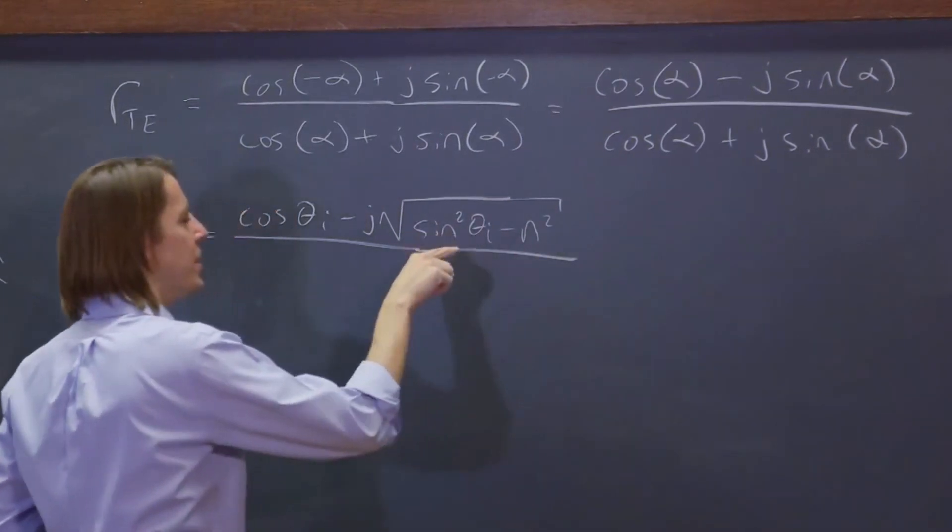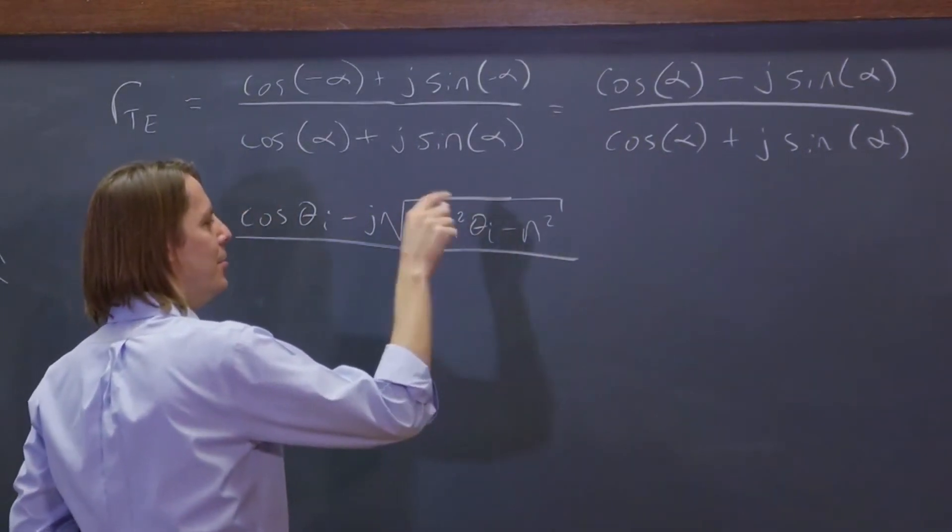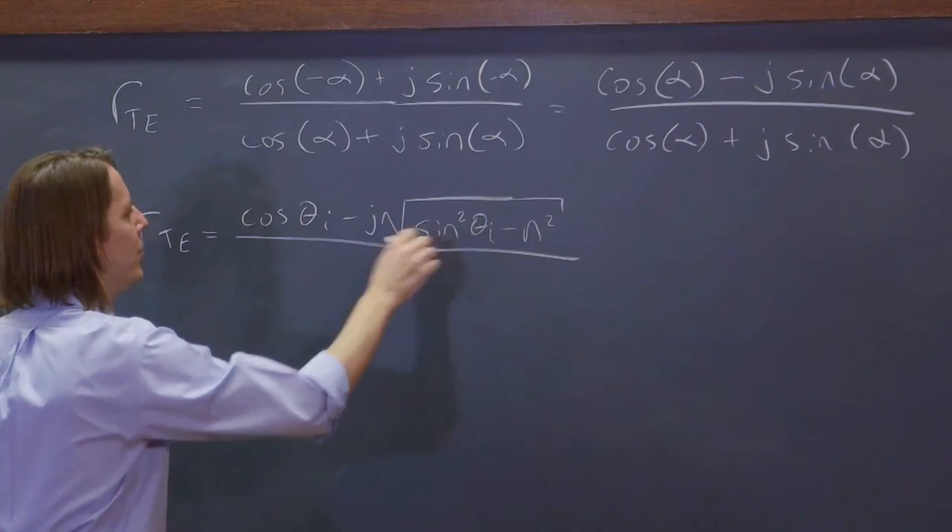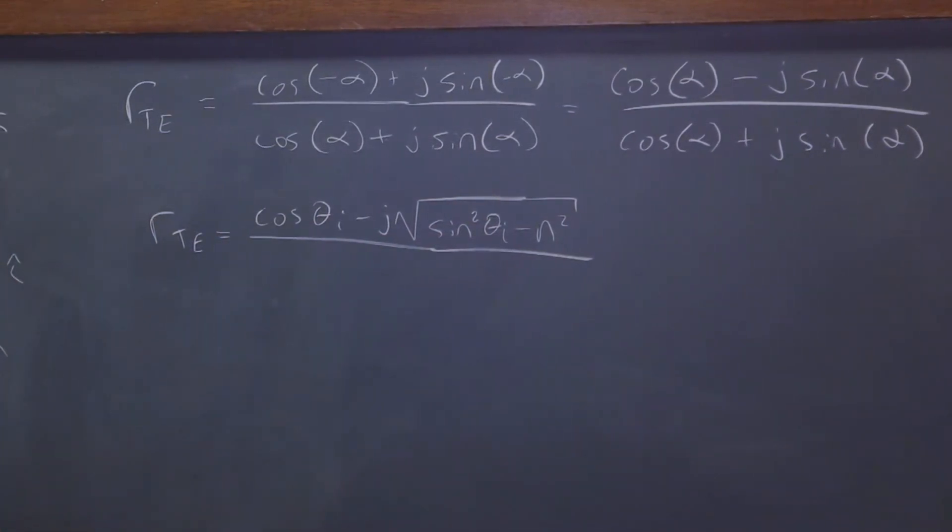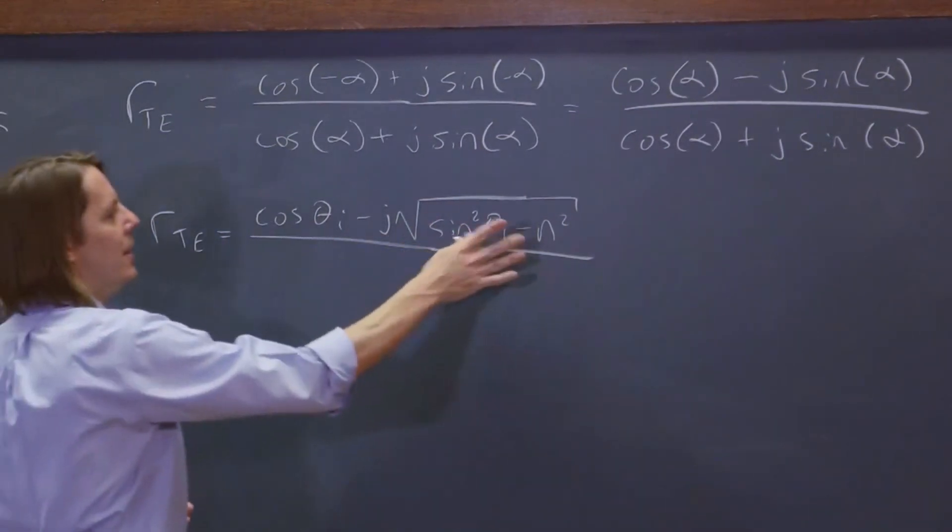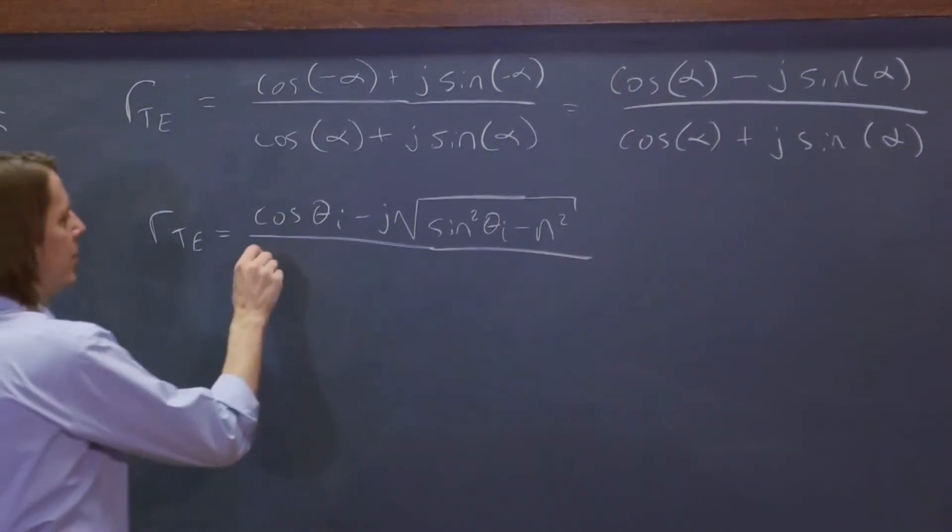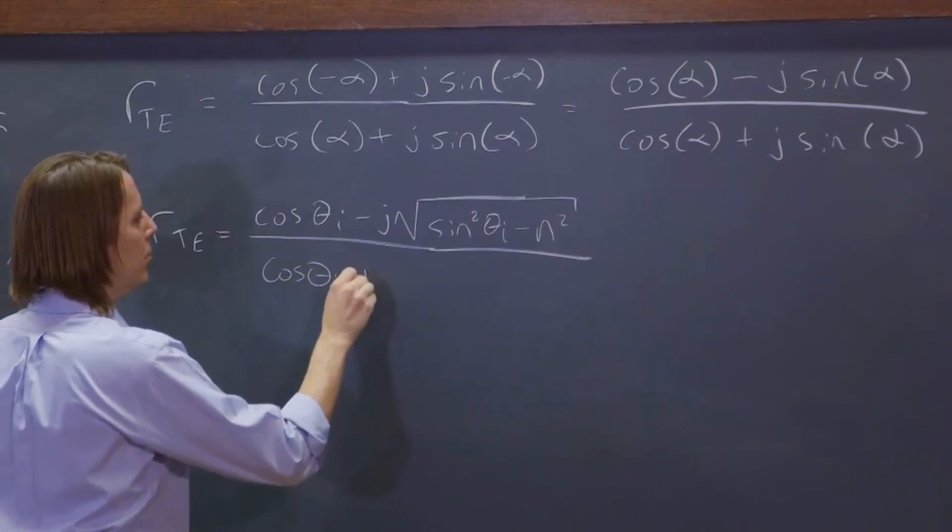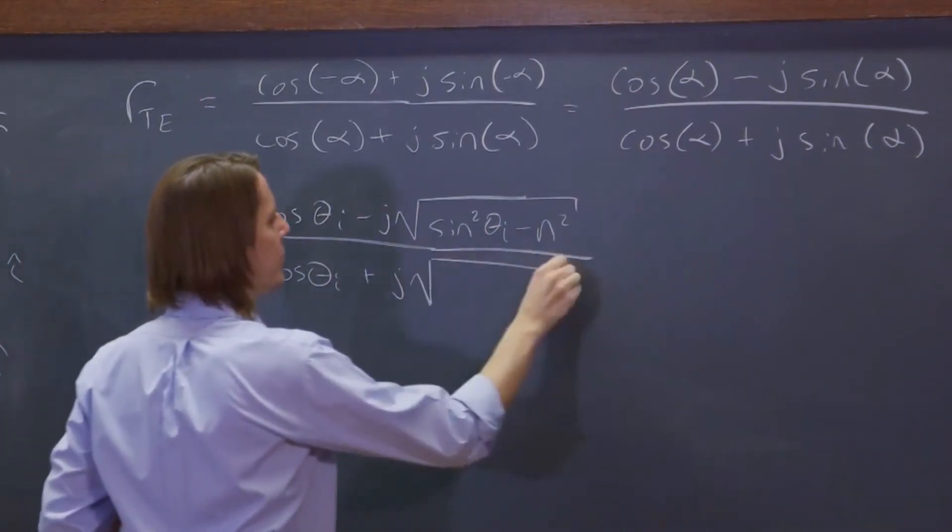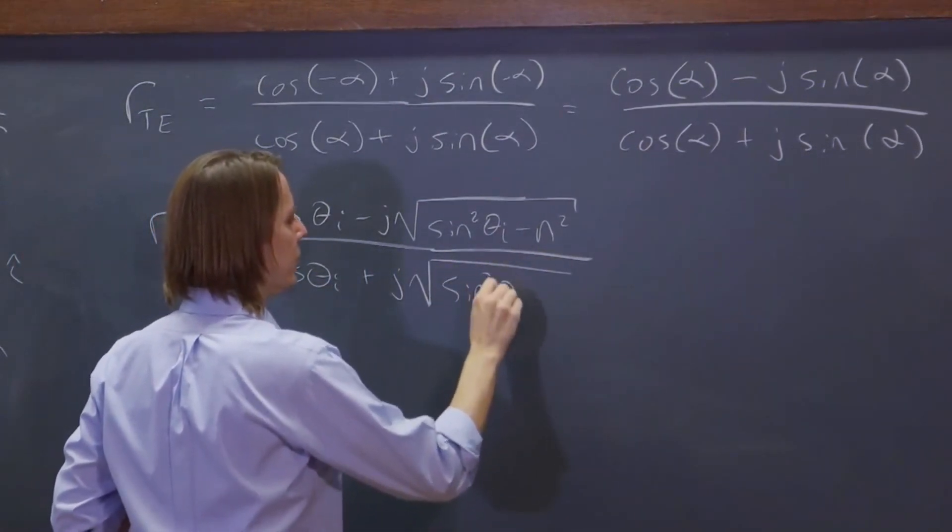So that's minus j times the square root of sine squared theta i minus n squared. Because we are at large angles where the sine squared theta i will be bigger than the n squared. So this thing will stay real, and we've made it imaginary there. We just pulled out a negative 1. And then we'll do the same thing on the bottom: cosine plus j times the square root of sine squared theta i.